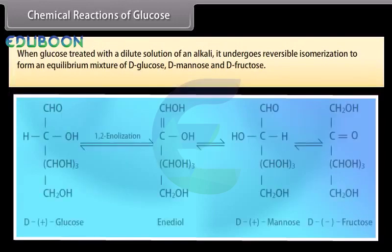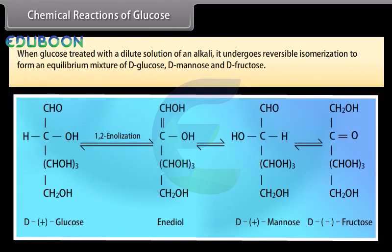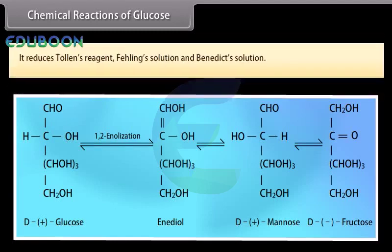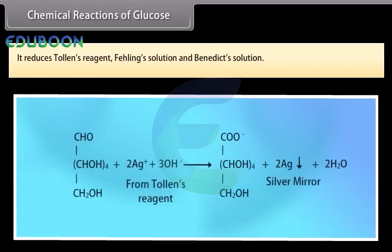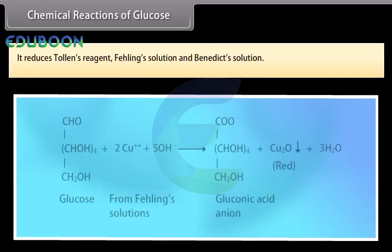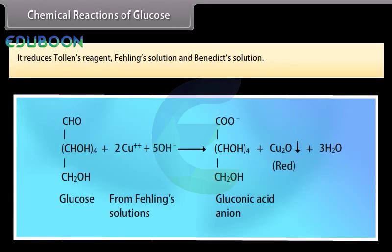When glucose is treated with a dilute solution of an alkali, it undergoes reversible isomerization to form an equilibrium mixture of D-glucose, D-mannose and D-fructose. It reduces Tollens' reagent, Fehling's solution and Benedict's solution.